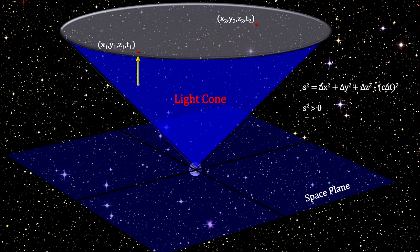In other words, it is possible for an event at an earlier time within the cone to be the cause of an event at a later time within the cone.